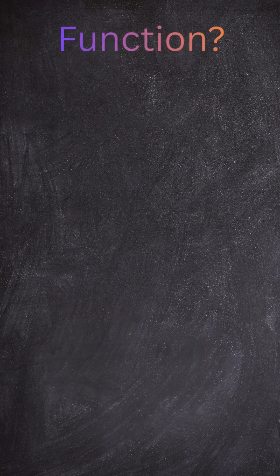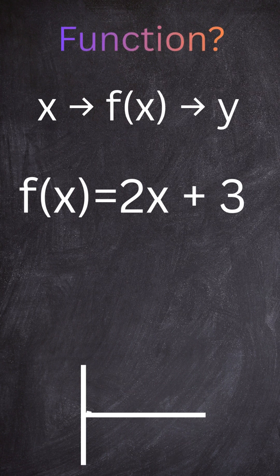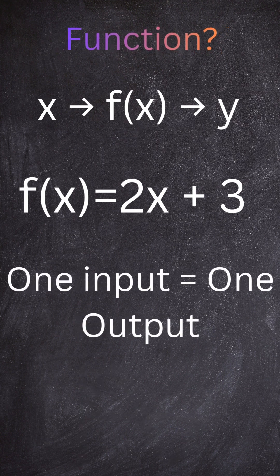Now, a function isn't a question or a fact. It's a rule. It tells you how to go from input to output. For example, f of x equals 2x plus 3. Every input x gives exactly one output y. That's a mapping rule.